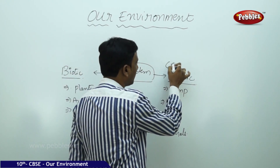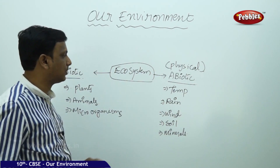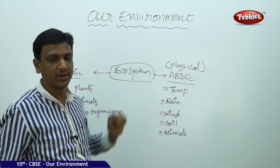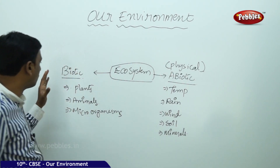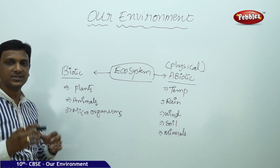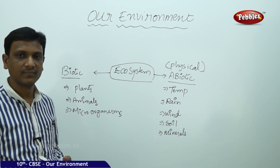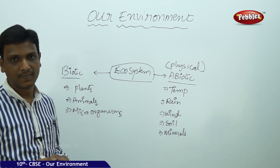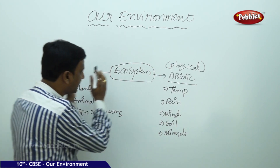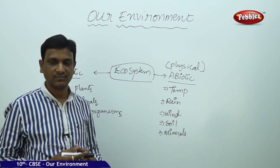The abiotic components, also called physical components, include temperature, rainfall, wind, humidity, soil, and minerals. The biotic components include plants, animals, and microorganisms. In any ecosystem, these biotic and abiotic components interact with each other — biotic components interact among themselves and also with the abiotic components.